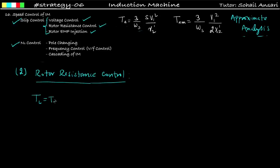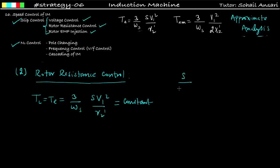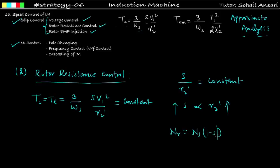The second method is rotor resistance control. Again, assuming load torque is constant, under stable operation: Te = 3/(ωs) × sV1²/R2' = constant. Here supply voltage is held constant, ωs is constant, so from this equation s/R2' must be constant, meaning slip is directly proportional to R2'. Increasing rotor resistance increases the slip, and since Nr = Ns(1 − s), the rotor speed decreases.